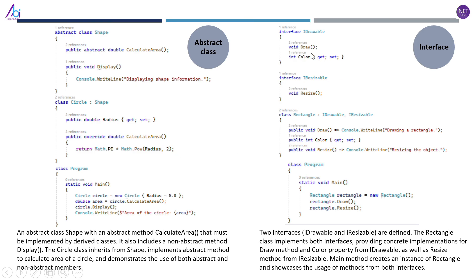For the interface example, two interfaces — IDrawable and IResizable — are defined. The Rectangle class implements both interfaces, providing concrete implementations for the Draw method and Color property from IDrawable, as well as the Resize method from IResizable. The main method creates an instance of Rectangle and showcases the use of methods from both interfaces. You can clearly see that the interfaces only contain method definitions, while the Rectangle class provides the actual implementations.